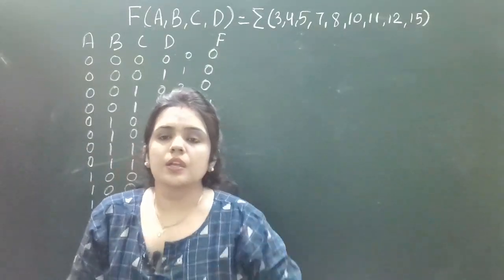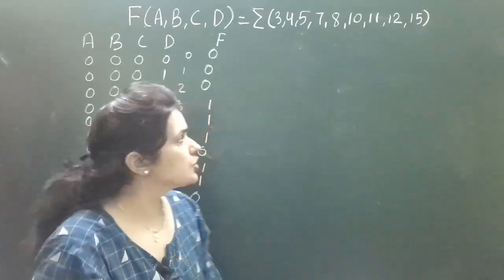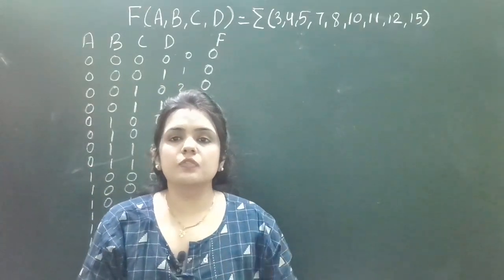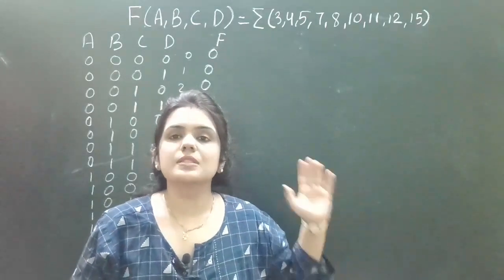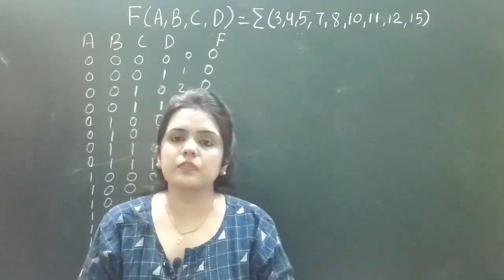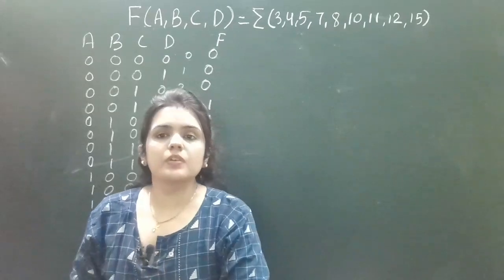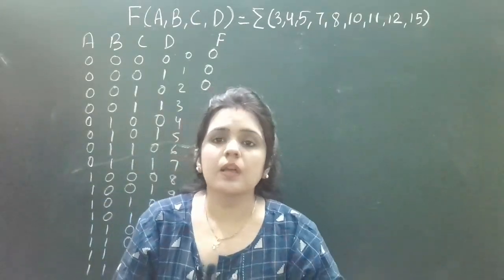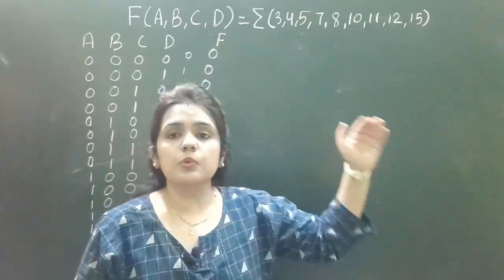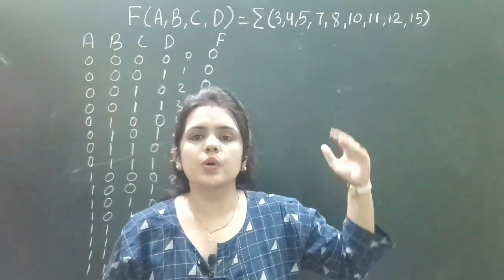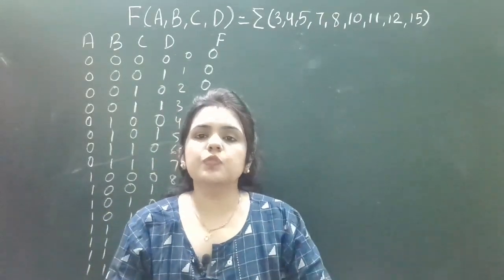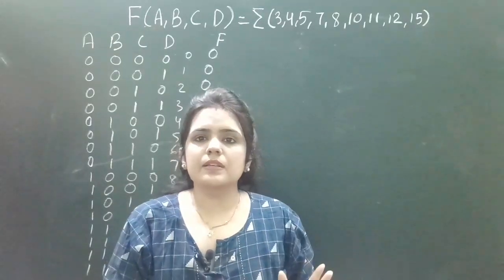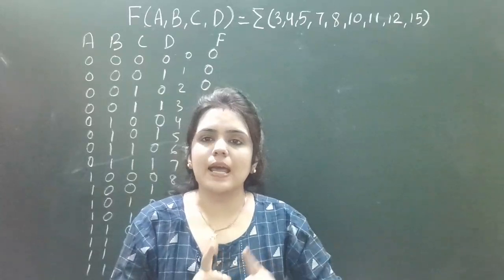This is the truth table corresponding to this Boolean function. Now we have to implement this Boolean function using a multiplexer. Our first task is to choose the multiplexer. If it is specified in the question paper which multiplexer to use, follow that. But if not, follow the standard rule.